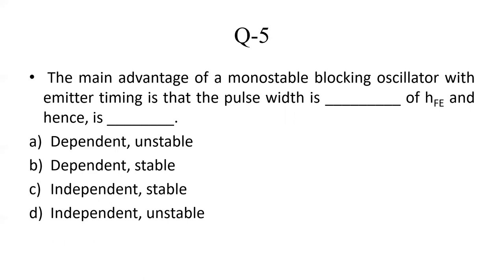The next question: the main advantage of a monostable blocking oscillator with emitter timing is that the pulse width is independent of HFE, and hence is stable. This means the pulse width will not depend on temperature, so it is stable. The correct option is C: independent, stable.